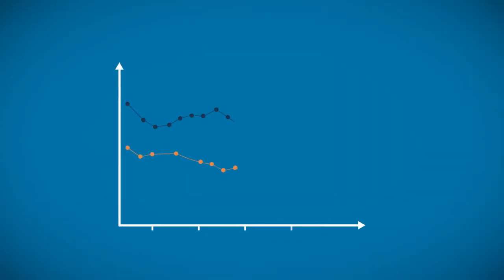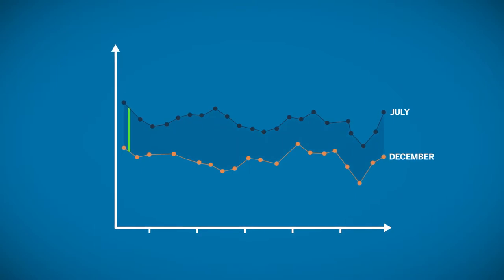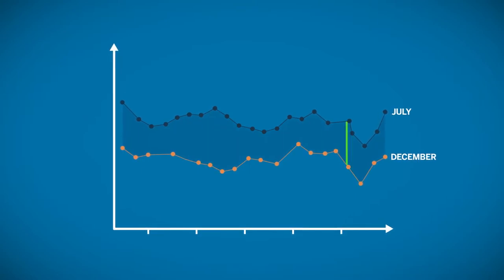Calendar spread traders are primarily focused on changes in the relationship between the two contract months. The goal of this strategy is to take advantage of those changes.